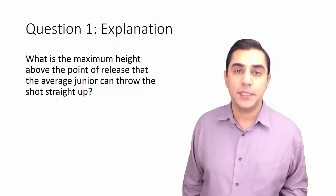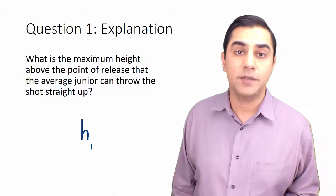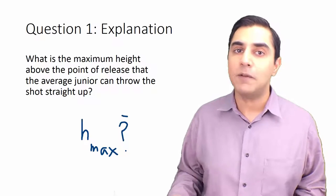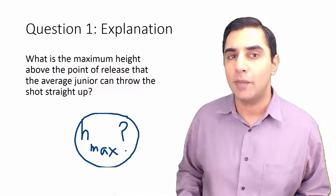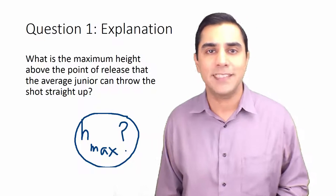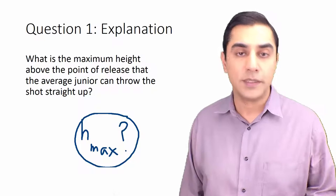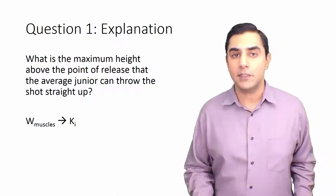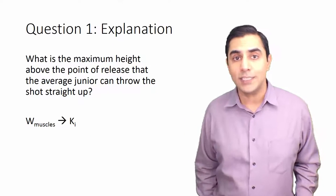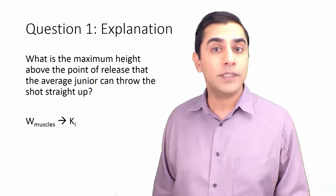For question one, they're asking for the maximum height above the point of release, so really they're only looking for the change in height. The actual final height on some projectile problems depends upon the initial height, but here we're only asking for the difference. The concept here is that the muscular work done is going to give the object its initial kinetic energy, which will be all of the mechanical energy it has upon the point of release.